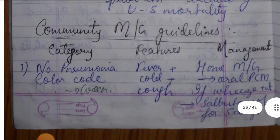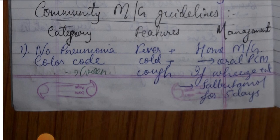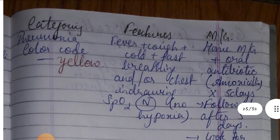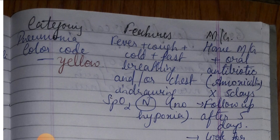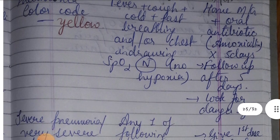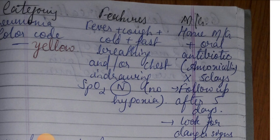Pneumonia community management guidelines: if there is no pneumonia, the color code is green. Features include fever, cold, and cough but SpO2 is normal with no hypoxia. Management is home-based with oral antibiotics such as amoxicillin for a defined number of days, with follow-up arranged. Watch for danger signs.